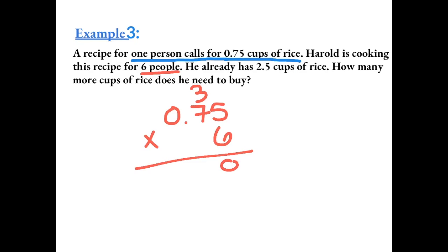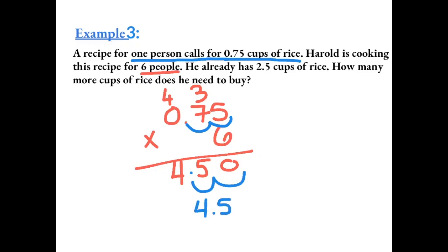6 times 5 gives us 30. 6 times 7 gives us 42, plus 3 more gives us 45. 6 times 0 is 0, plus 4 is 4. Now there are two numbers after the decimal, so we're going to move the decimal two places, and we get 4.5 cups of rice needed for 6 people.